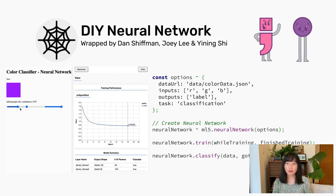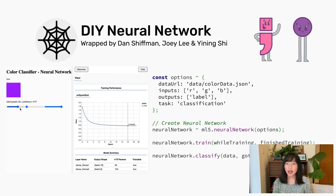This is a demo of how we can create a neural network that classifies RGB values into common color names. With MFI.js, we can load the data, create a model, train it, and run the model. With the debug mode enabled, MFI.js can also visualize the training progress on the right-hand side, which helps us to debug and improve our neural network.